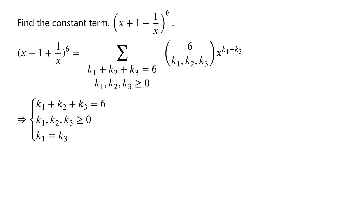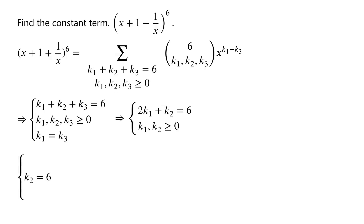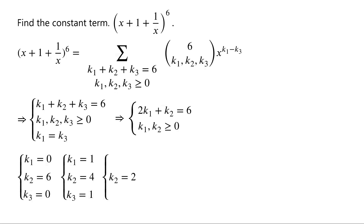The system of equations can be simplified to 2k1 plus k2 equals 6, where k1 and k2 are non-negative integers. Clearly k2 must be even, so k2 can take values 6, 4, 2, or 0. When k2 equals 6, k1 equals 0 and k3 equals 0. When k2 equals 4, k1 equals 1 and k3 equals 1. When k2 equals 2, k1 equals 2 and k3 equals 2.